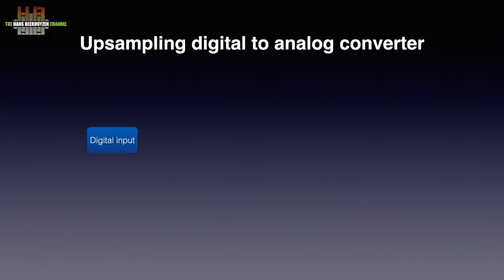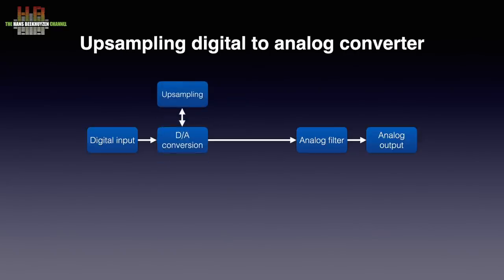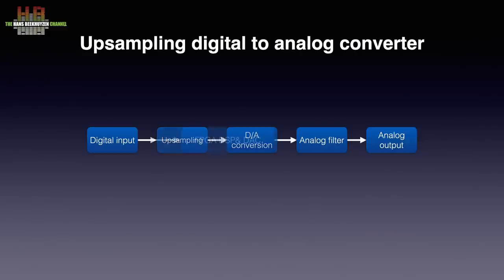This is what happens inside an upsampling DAC. From the digital input the signal goes to the DAC chip with integrated upsampling, followed by an analog filter that sends the analog signal to the output. A simple good-sounding analog filter can be used since the sampling frequency is 2 to 8 times higher because of the upsampling. The DAC chip with integrated upsampling has limited computational power and thus relatively simple upsampling. More advanced designs use DAC chips that allow for an external microprocessor to do the upsampling, while top designs use FPGAs to do the upsampling and often also the digital-to-analog conversion.